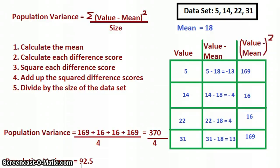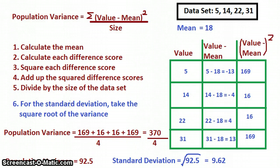Later on, you may learn about the standard deviation. Since we squared each of the values, the variance got very large. With the standard deviation, you take the square root of the population variance, and that brings things back down to size. If you're going to calculate the standard deviation, simply take the square root of the variance. Our variance was 92.5, so the standard deviation would be the square root of 92.5, which comes out to be 9.62, and it will be in the same unit of measurement as your original values. All right, take care.